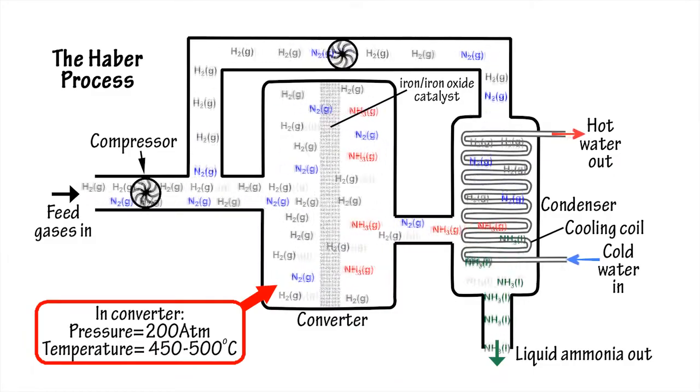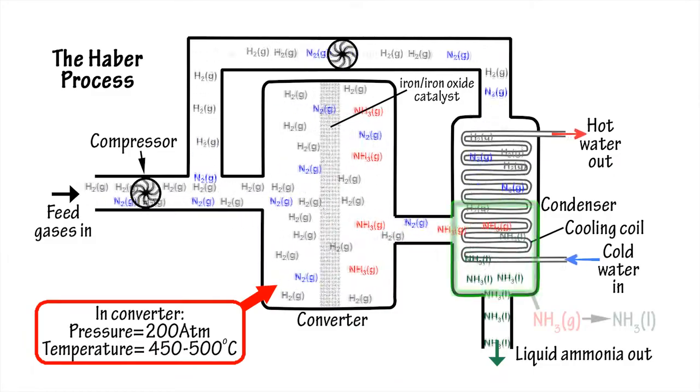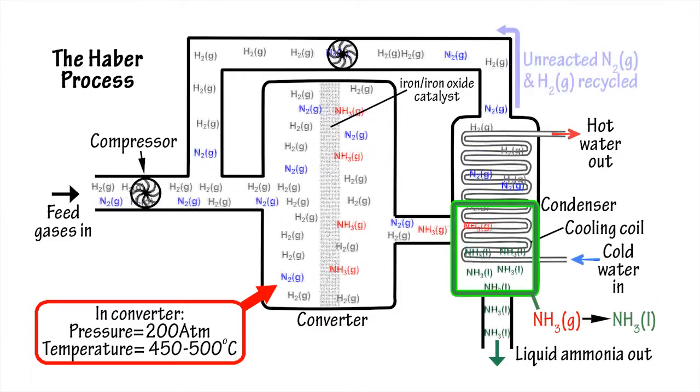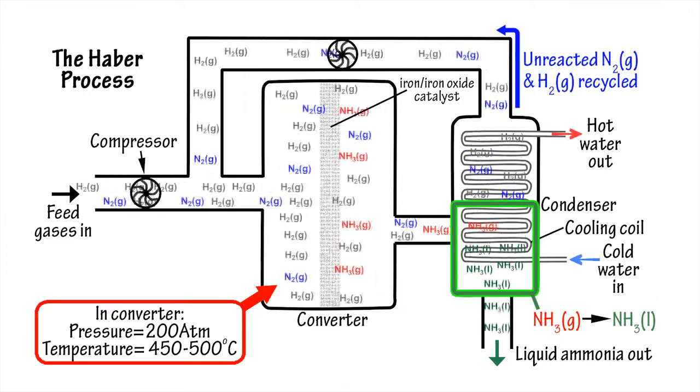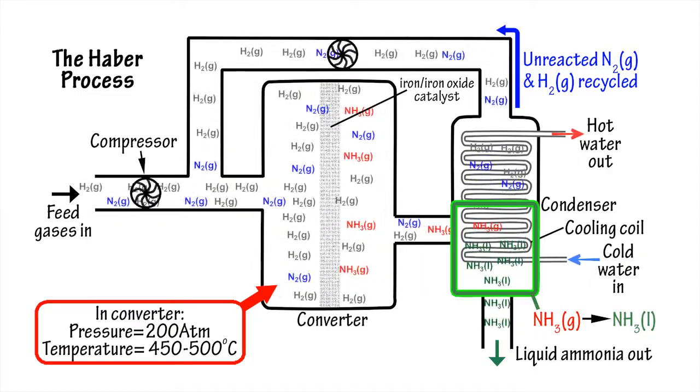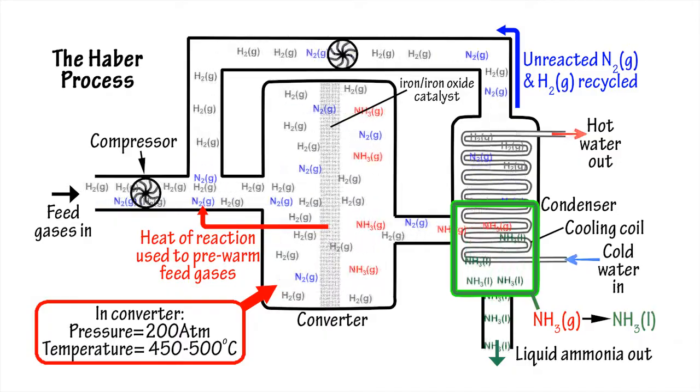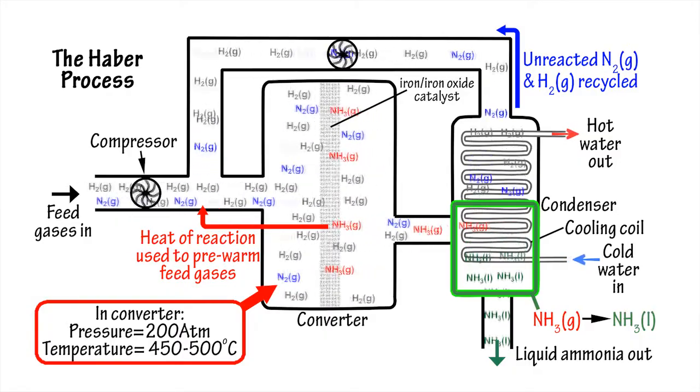The ammonia produced, which has a much lower boiling point than the other two gases, is cooled and condenses out as liquid ammonia, while any unreacted hydrogen and nitrogen gas is recycled back into the system, along with excess heat generated by the exothermic formation of ammonia.